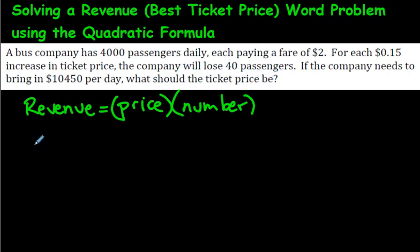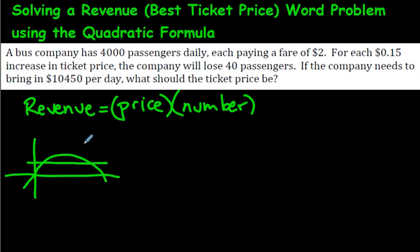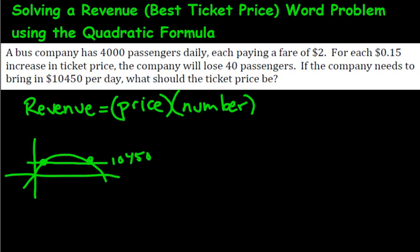Just like with that graph, when we had the parabola, let's say $10,450 is a target revenue level. There are going to be two answers. If I were this company, I would pick the lower of the two prices, because you want to make it look like you're charging less. Even if the revenue is the same, you still want to go with the cheaper answer. So we're trying to find the price that gives us $10,450.